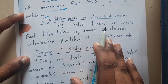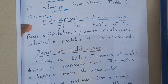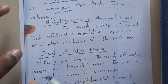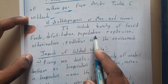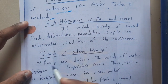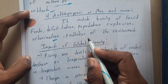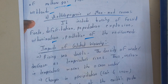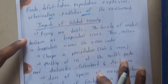Man-made causes include the burning of fossil fuels — most of us drive vehicles, and diesel and petrol are fossil fuels. Deforestation, population growth, urbanization (converting villages into cities), and pollution are also common man-made causes. This pollution indirectly causes global warming.